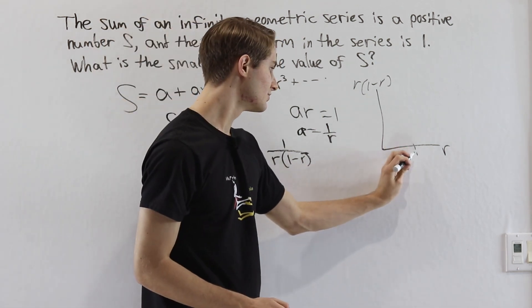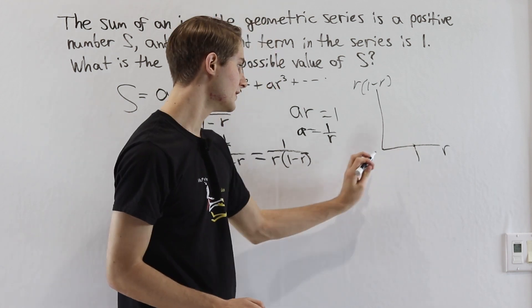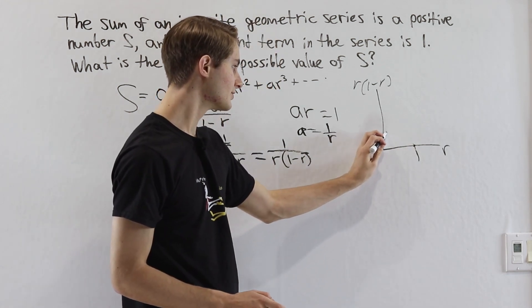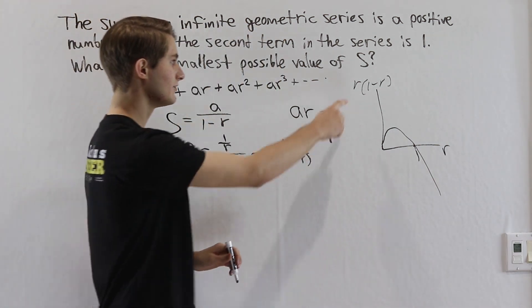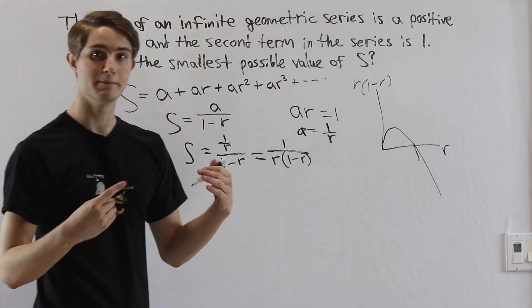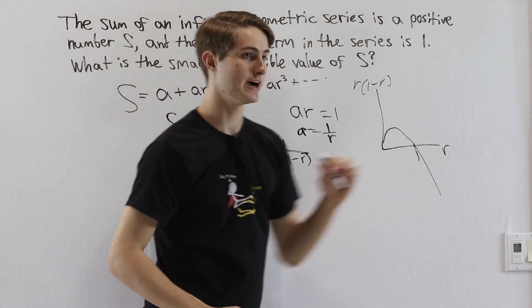And it's going to have a parabola that goes up and then down, just like that. Because we have r times negative r being a minus r squared, our parabola is going to go downward.